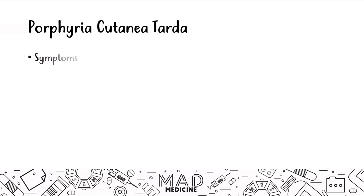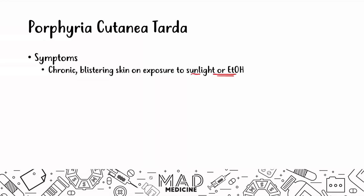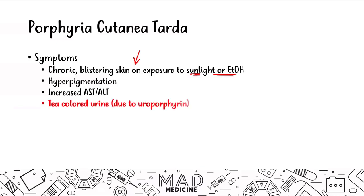The uroporphyrin deposited in the skin causes chronic blistering on exposure to sunlight or alcohol. Interestingly, many people think the origin of vampires came from individuals suffering from porphyria cutanea tarda. These patients will present with hyperpigmentation of the skin, an increased AST to ALT ratio, and tea-colored urine — all because of uroporphyrin.